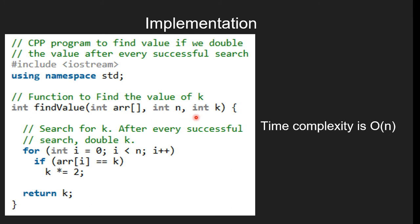Now let's look at the implementation. The user-defined function findValue takes three parameters: an integer array and two integer variables. Inside the function, we scan each element of the array. If it equals k,